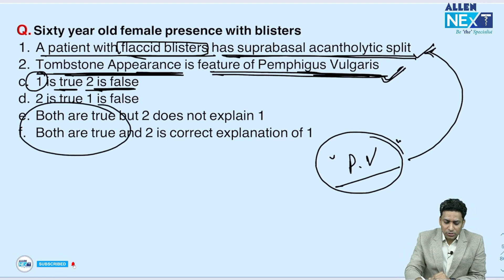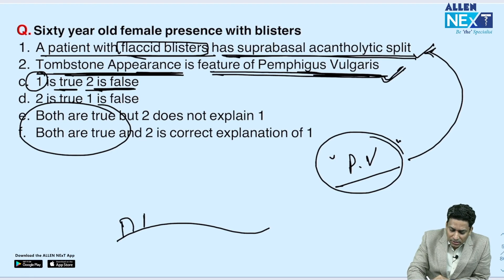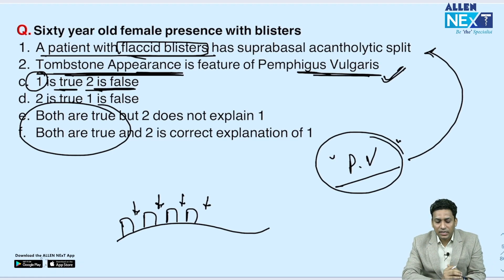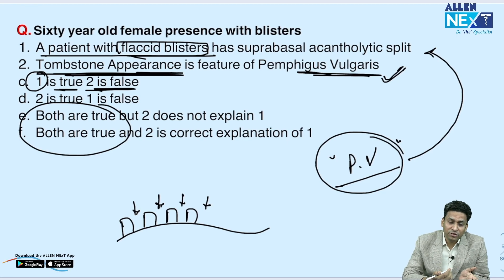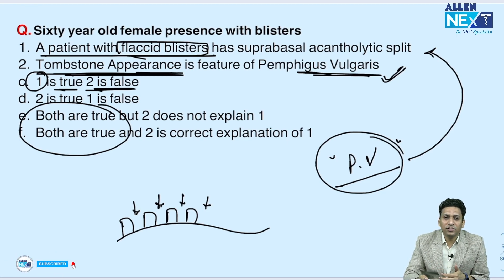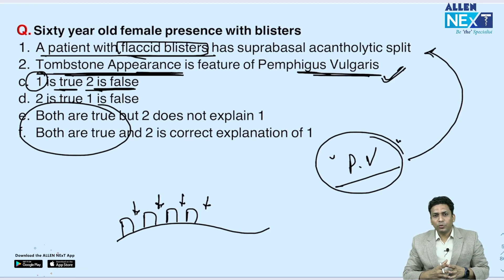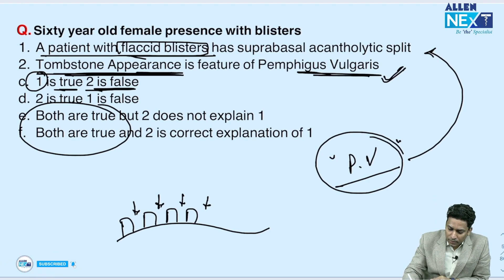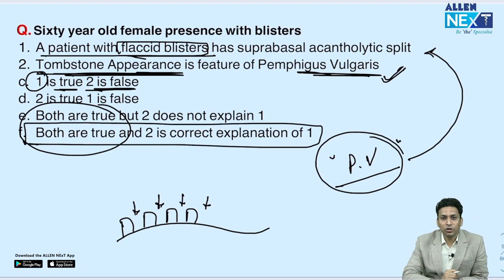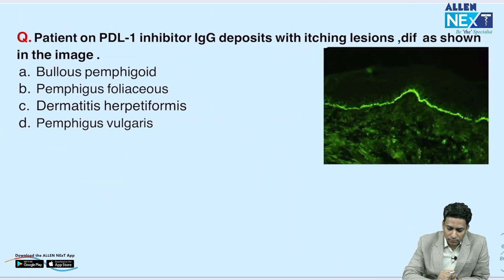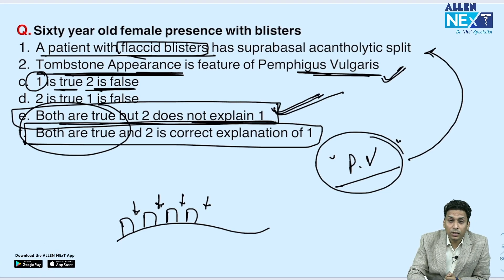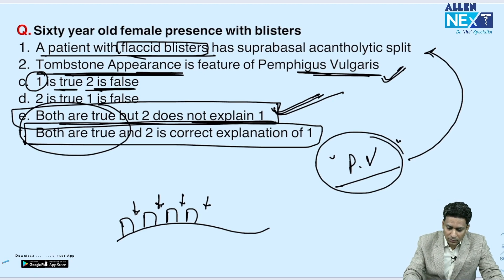Row of tombstones appearance occurs because keratinocytes start separating from each other, while suprabasal split is acantholysis occurring just above the basal layer. Both are true, but the second is not the correct explanation of the first. Acantholysis does not take place because of the tombstone's appearance — both phenomena occur together. So the answer is: both are true but the second does not explain the first.